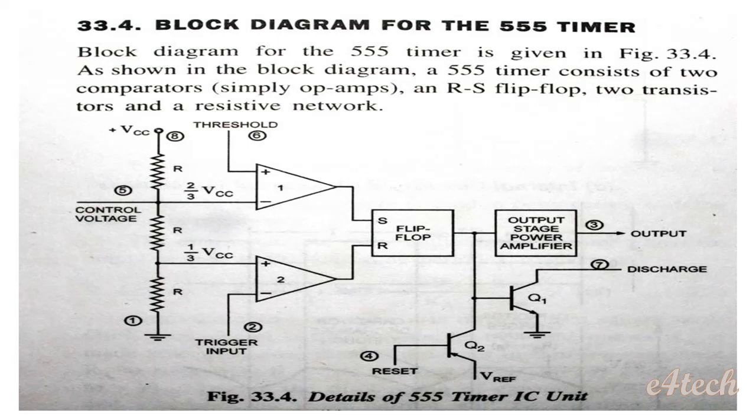The 555 timer consists of two comparators, an RS flip-flop, two transistors, and a resistive network. The resistive network is a potential divider network consisting of three resistors connected to the VCC supply.